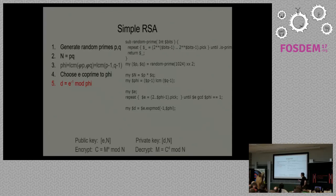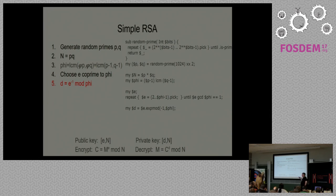Now we want D, which is going to be our private key — we want the inverse of that. The idea is D times E ends up being 1 mod phi. In other languages we'd have to write a routine to do it, but in Perl 6 we have EXPMOD — just give it minus 1 and it'll give you the inverse. It's surprisingly handy, and this is really short code compared to what we end up writing in other languages.